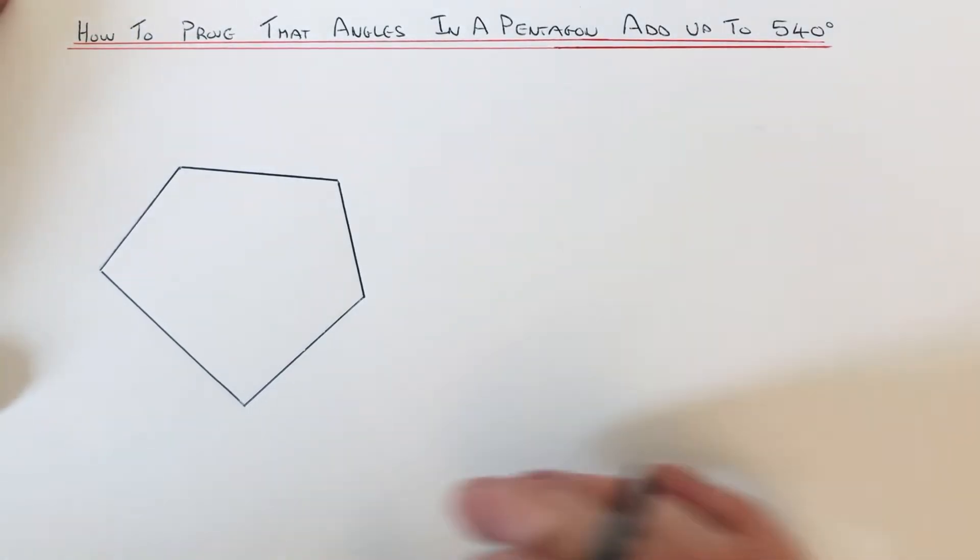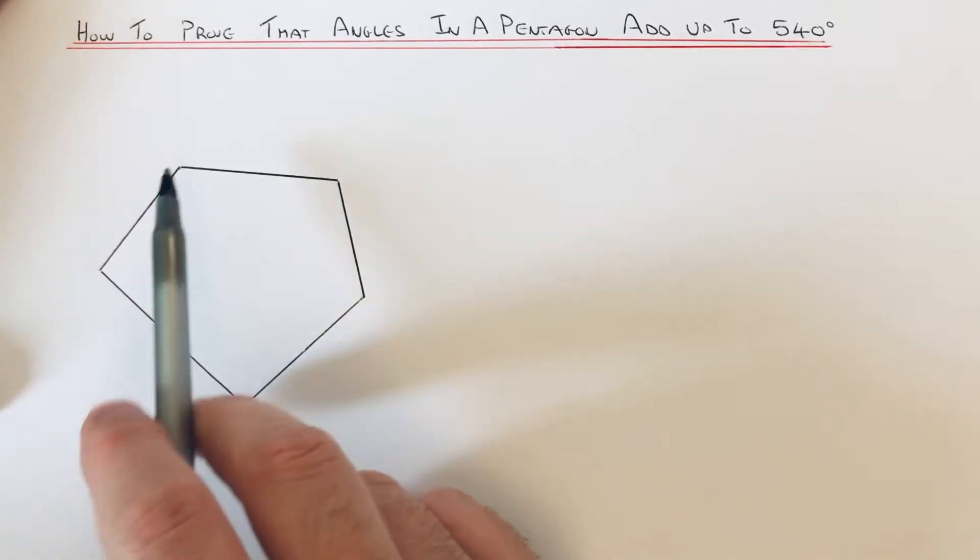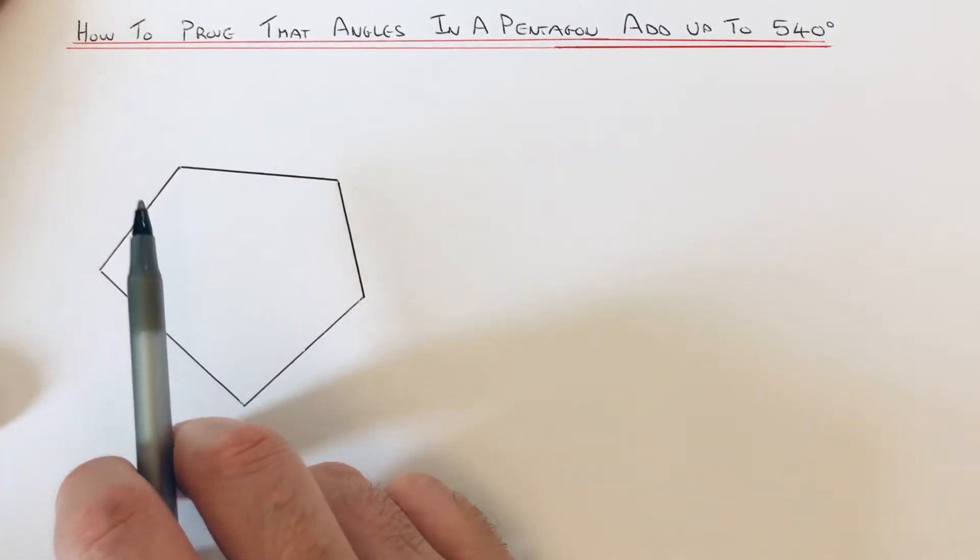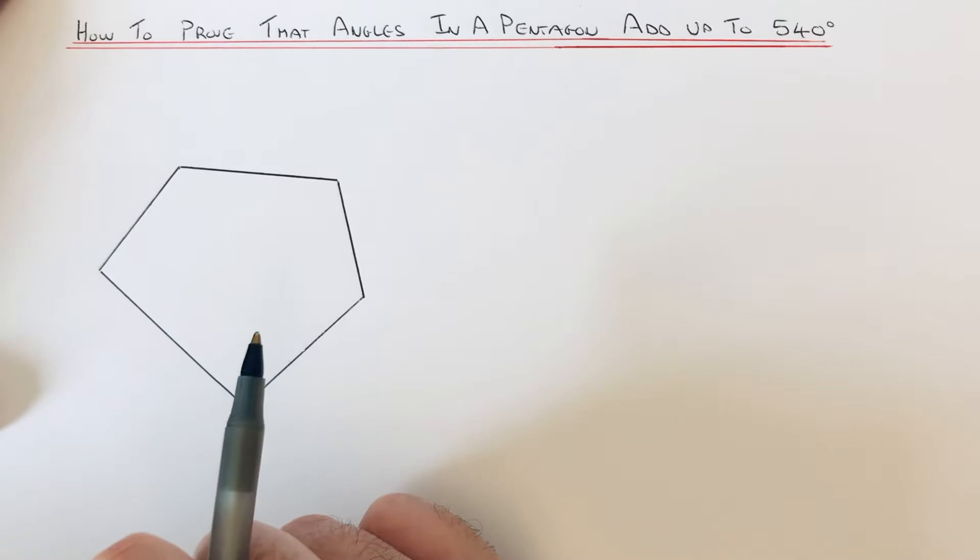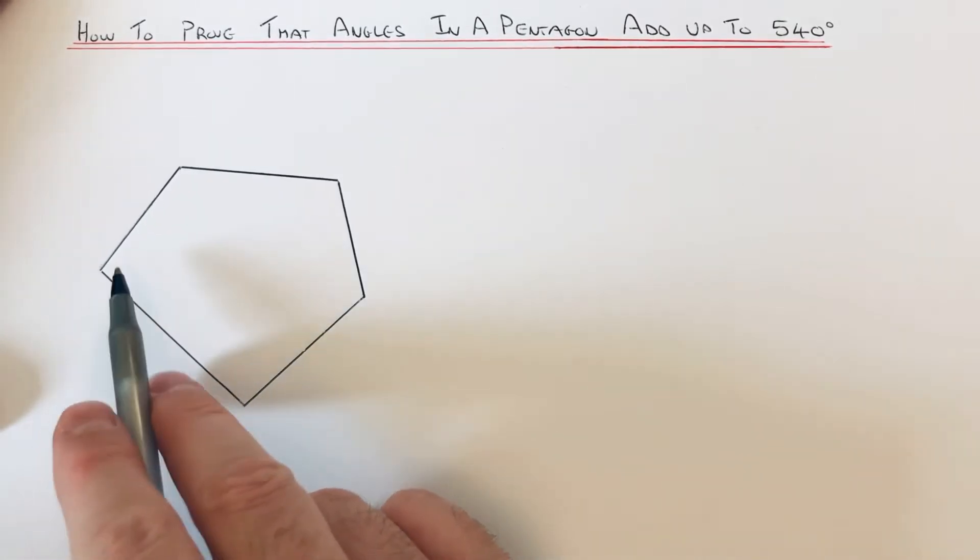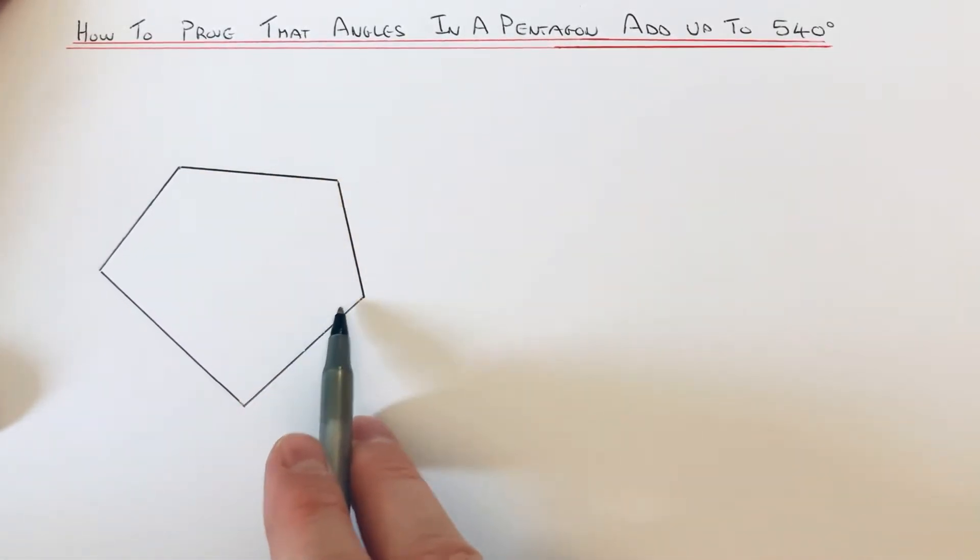Hi guys, welcome back. This is Maths 3000. Today I'm going to show you how to prove that the angles in a pentagon add up to 540. Okay, so we're proving that all these inside angles, interior angles, add up to 540.